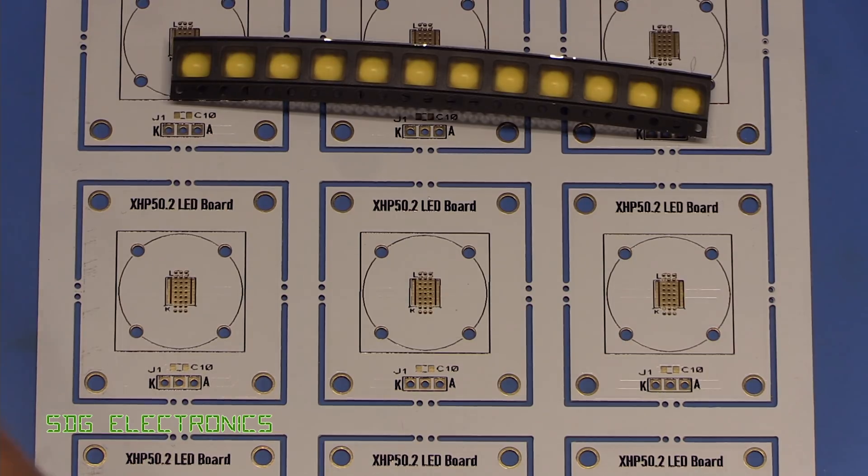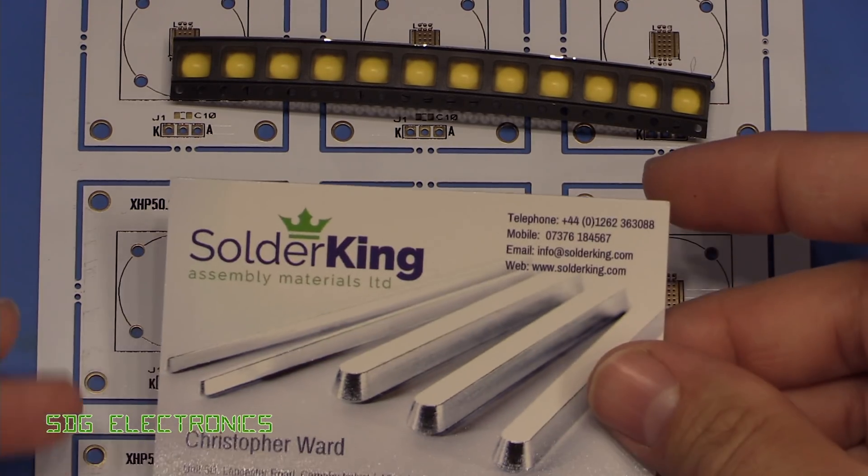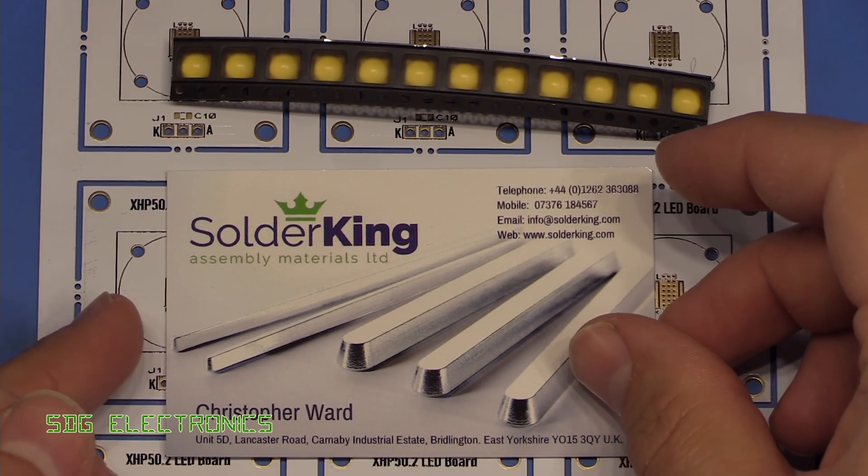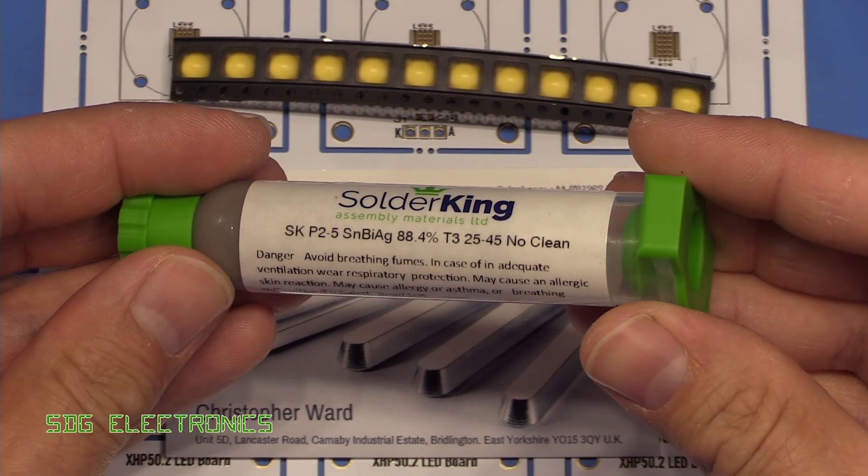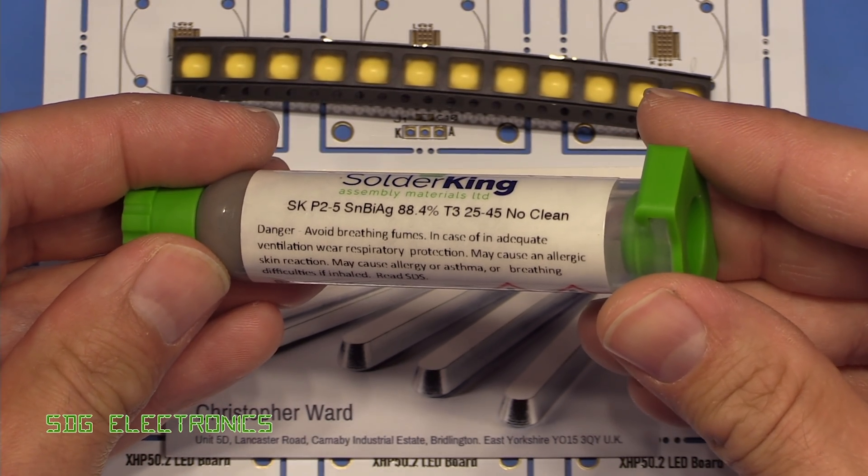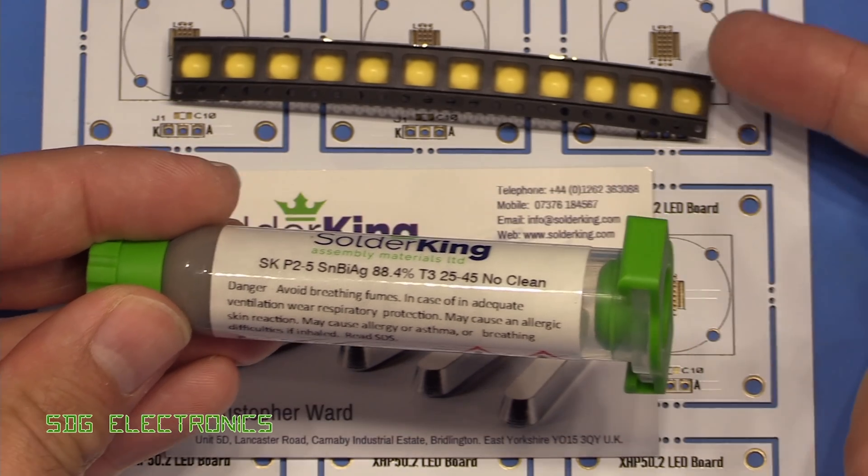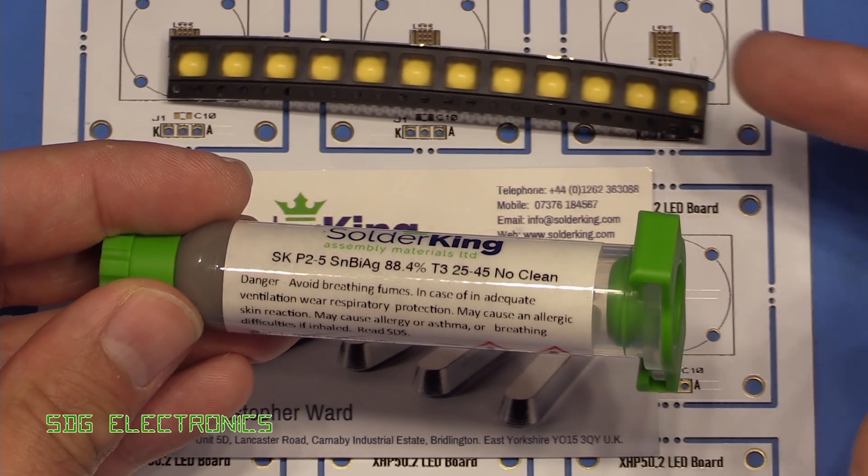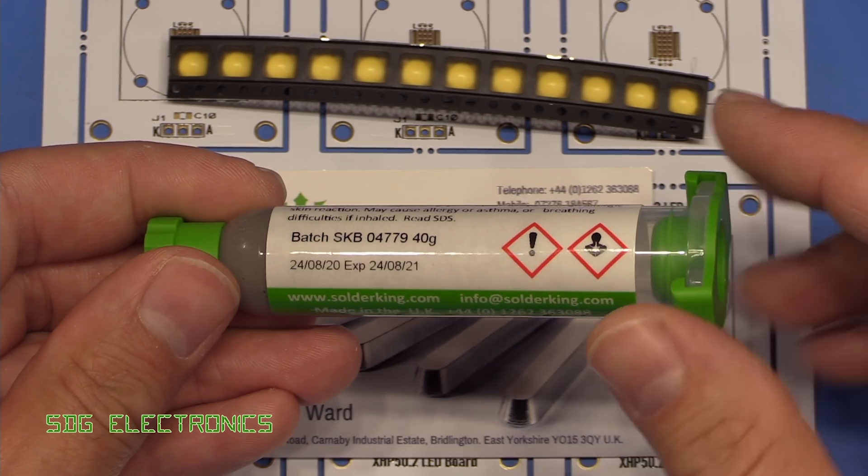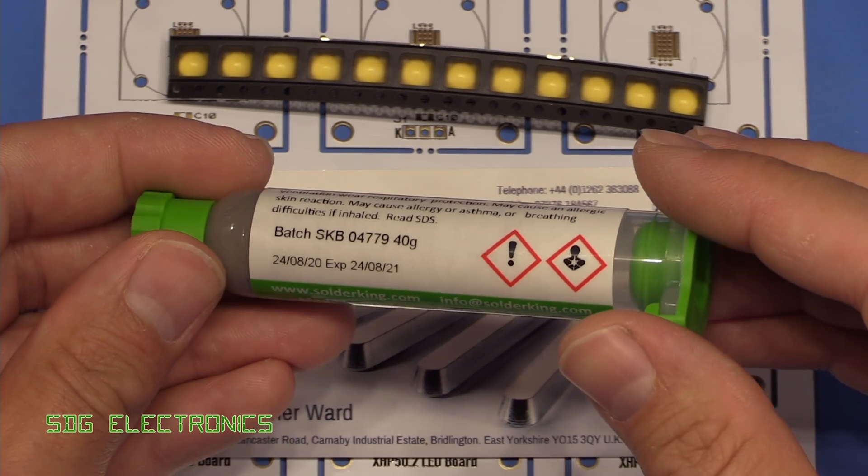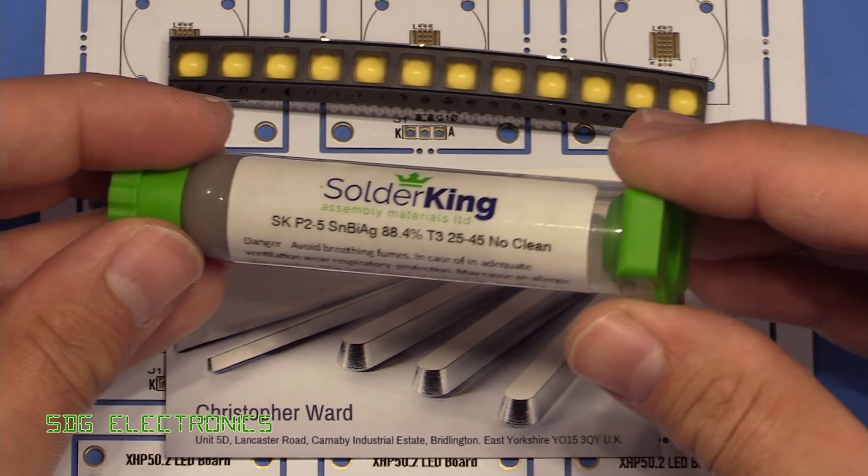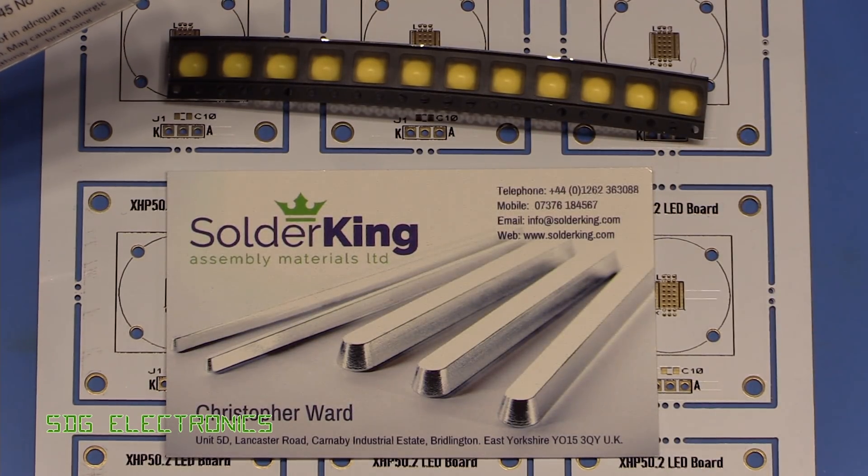And to assemble these LEDs onto it, Chris Ward from Solder King did send me through some new solder paste. So that's his business card if you're interested. But he sent through some new bismuth solder. So this is the low temperature solder, which I really quite like using for components like these that could be quite temperature sensitive. And you can see here, this was literally just made the other day. So big thanks to Chris Ward. And we're going to start soldering up these boards now.